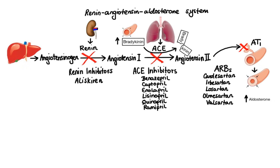So in summary, the agents that work on the renin-angiotensin-aldosterone system either block the production of angiotensin-2 or block its actions on the AT1 receptors. This in turn leads to decreased systemic vascular resistance but without significant changes in cardiac output.